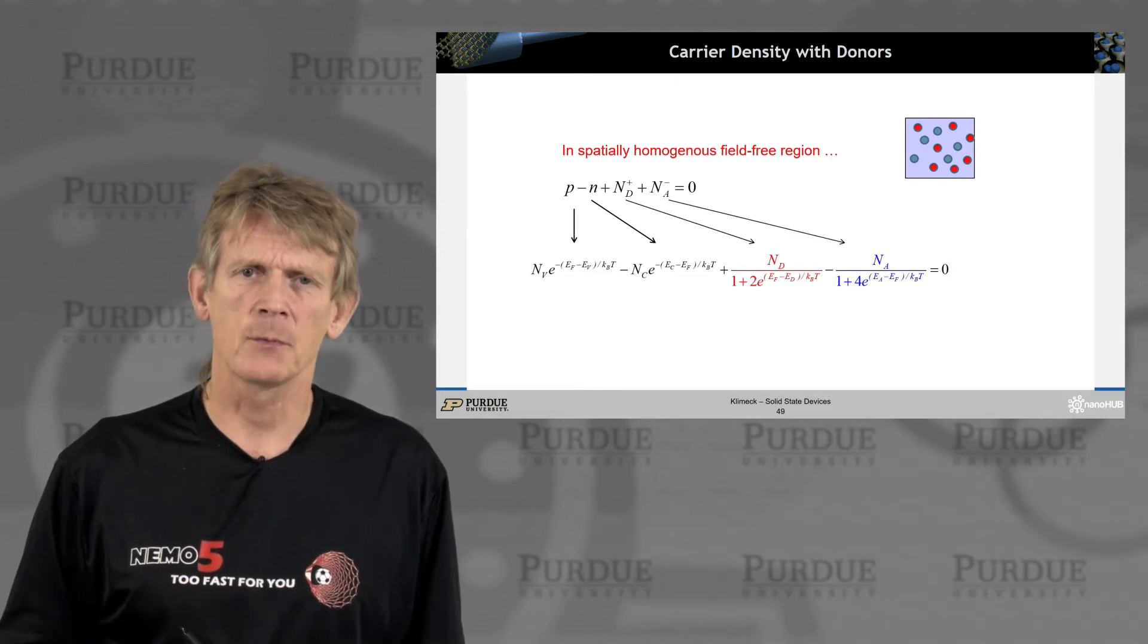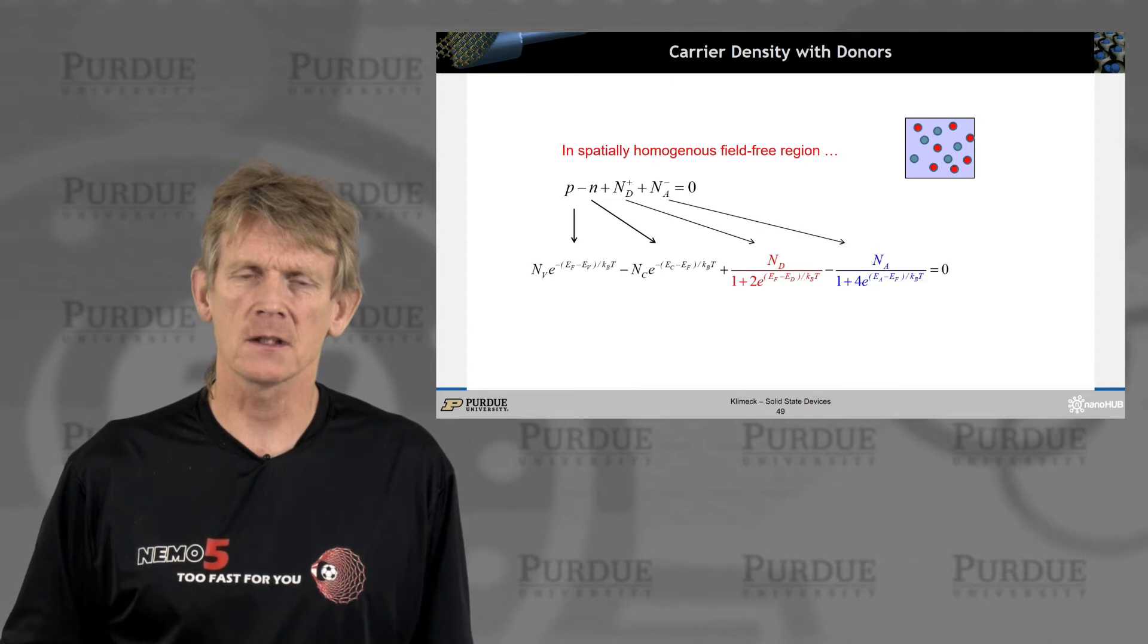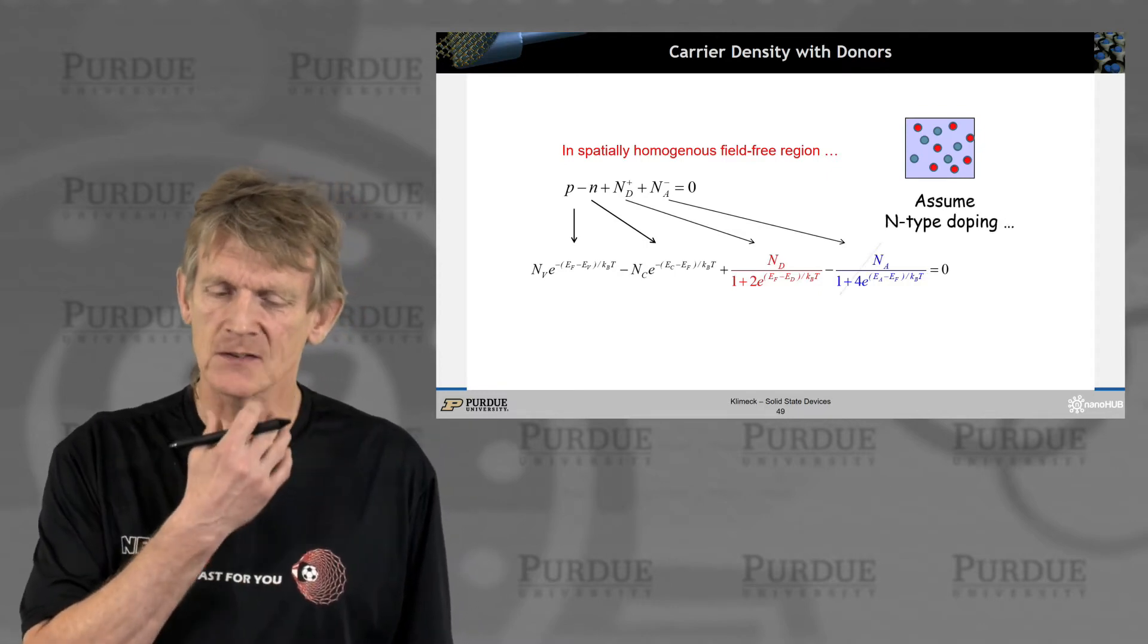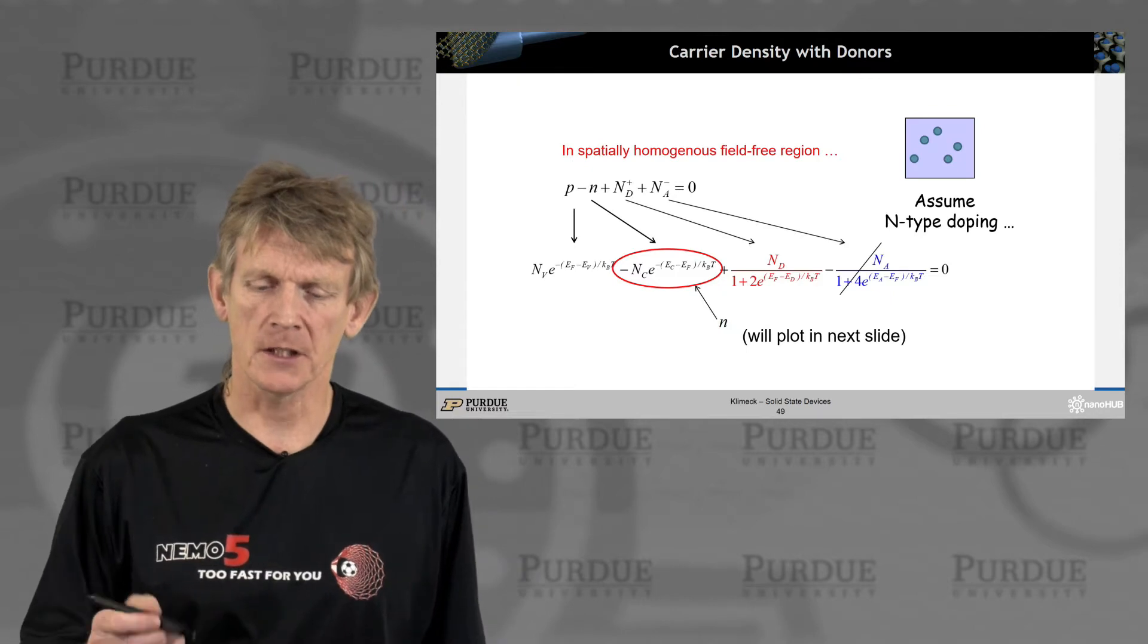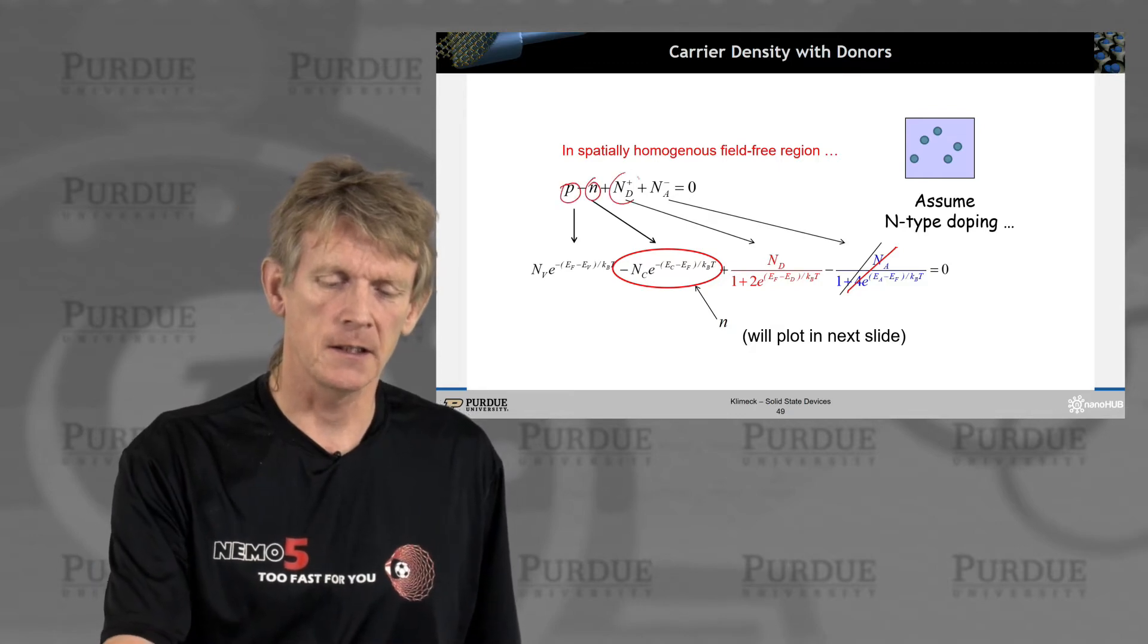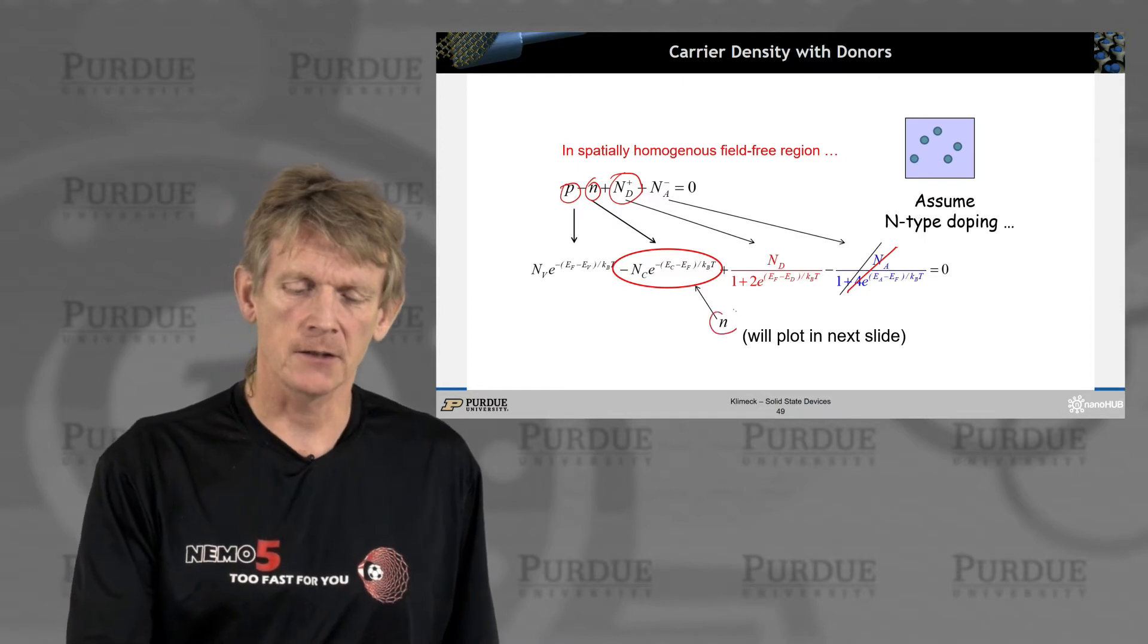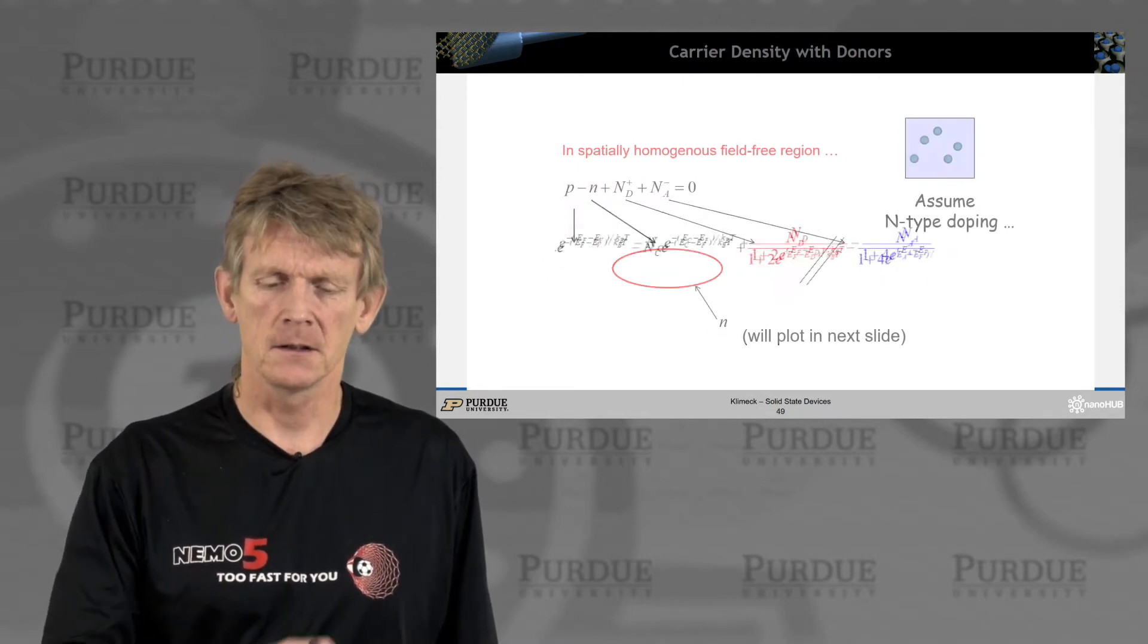We utilize this expression. We're going to consider a spatially homogeneous field-free semiconductor, so no external fields, and we're going to just assume n-type doping for now. We're going to chuck the acceptors here, and we're going to look at holes, electrons, and ionized dopants. Overall, we're interested in the electron density, and that's what we'll plot next in the chart here.